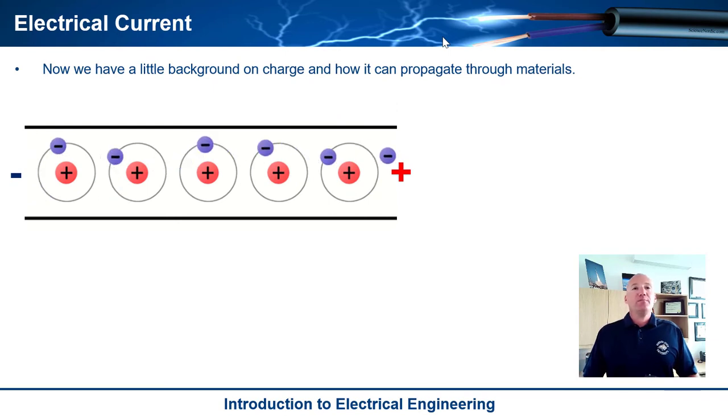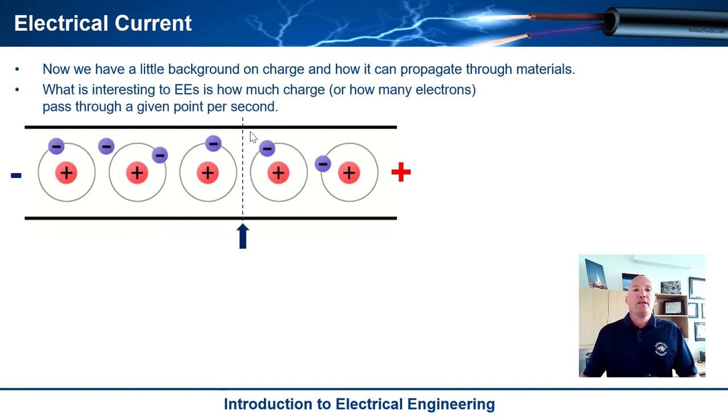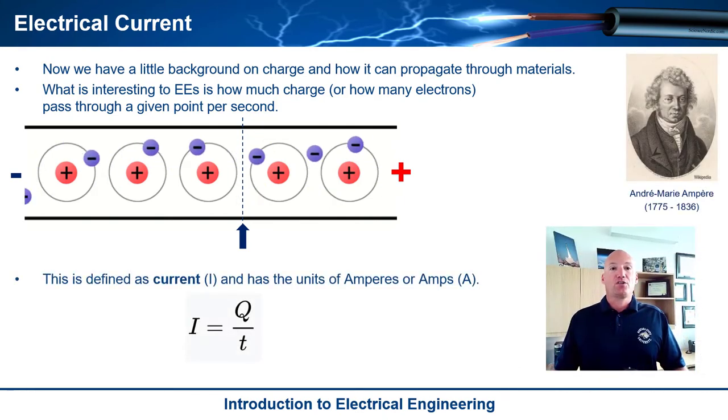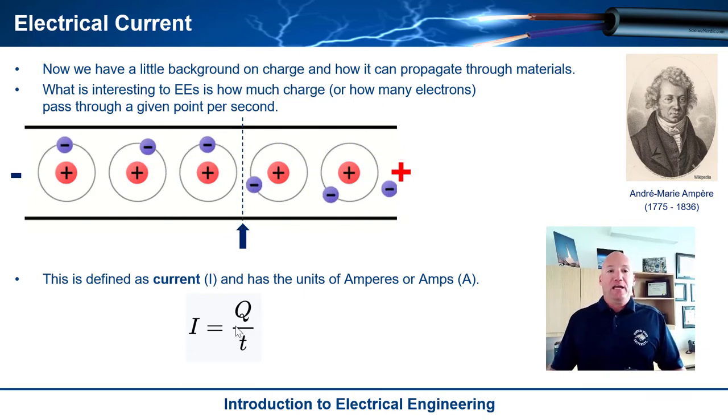Now we're sitting here and we have a little bit of background on charge and how it can possibly propagate through materials. And so what we really care about as electrical engineers is how much charge or how many electrons can pass through or do pass through a given point per second. And that thing is called current. And so we define this thing called electrical current as the amount of charge that passes through a point in the material or any point, per time.